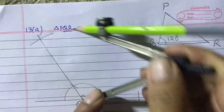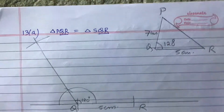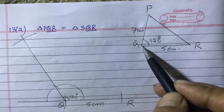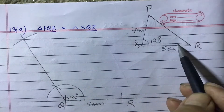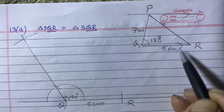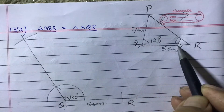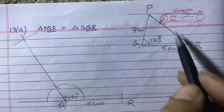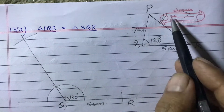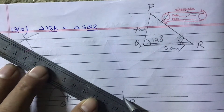From the 120-degree ray at Q, cut 7 centimeters to mark point P. Now we have to draw a parallel line. To draw another triangle equal in area, both triangles should be standing on the same base and between the same parallel lines. So we have to draw one line parallel to QR. To make this parallel, the alternate angles must be equal — if these two angles are equal, then the two lines will be parallel.